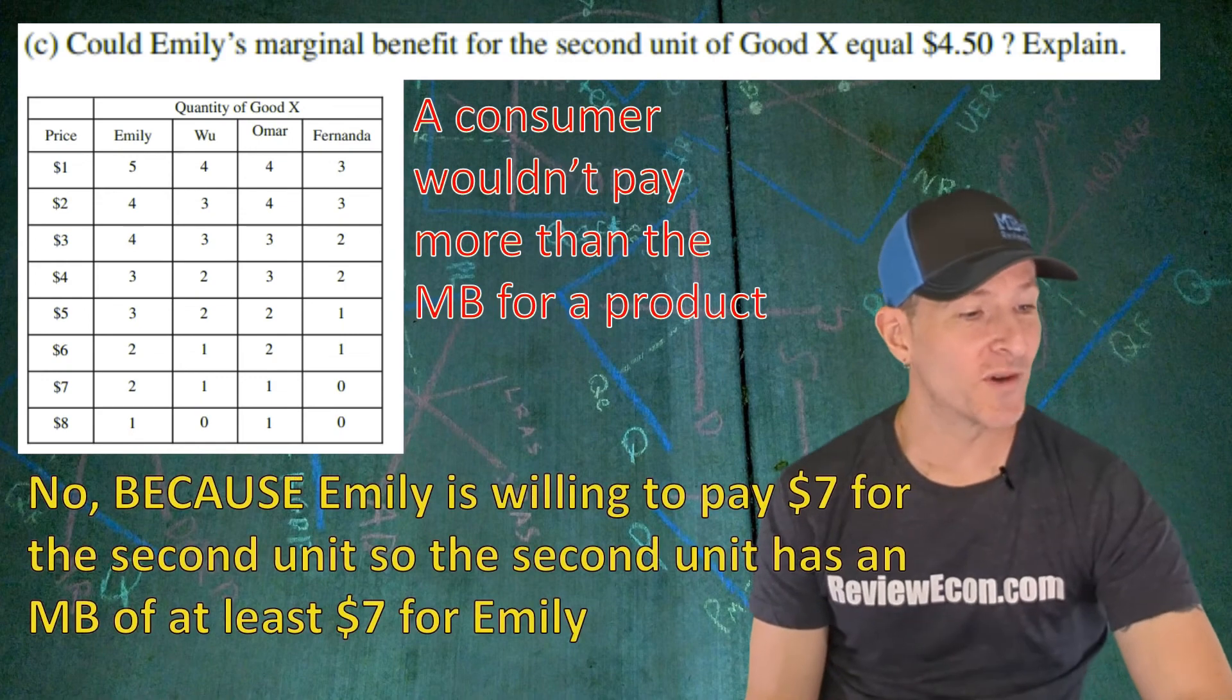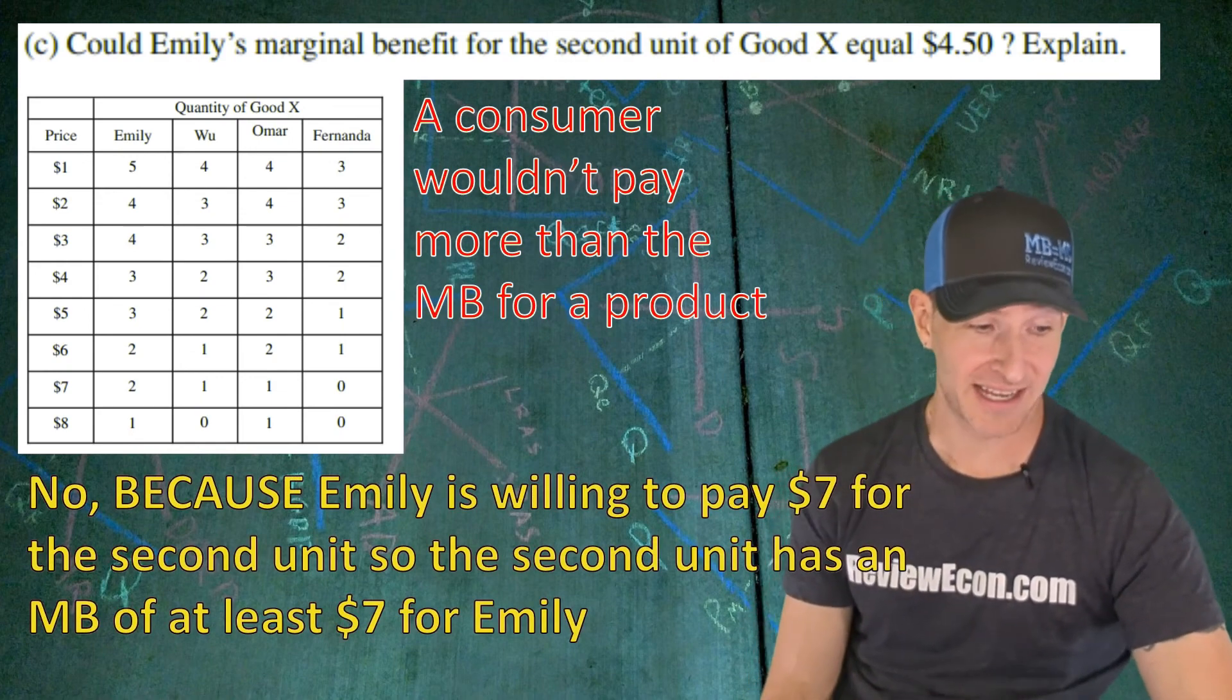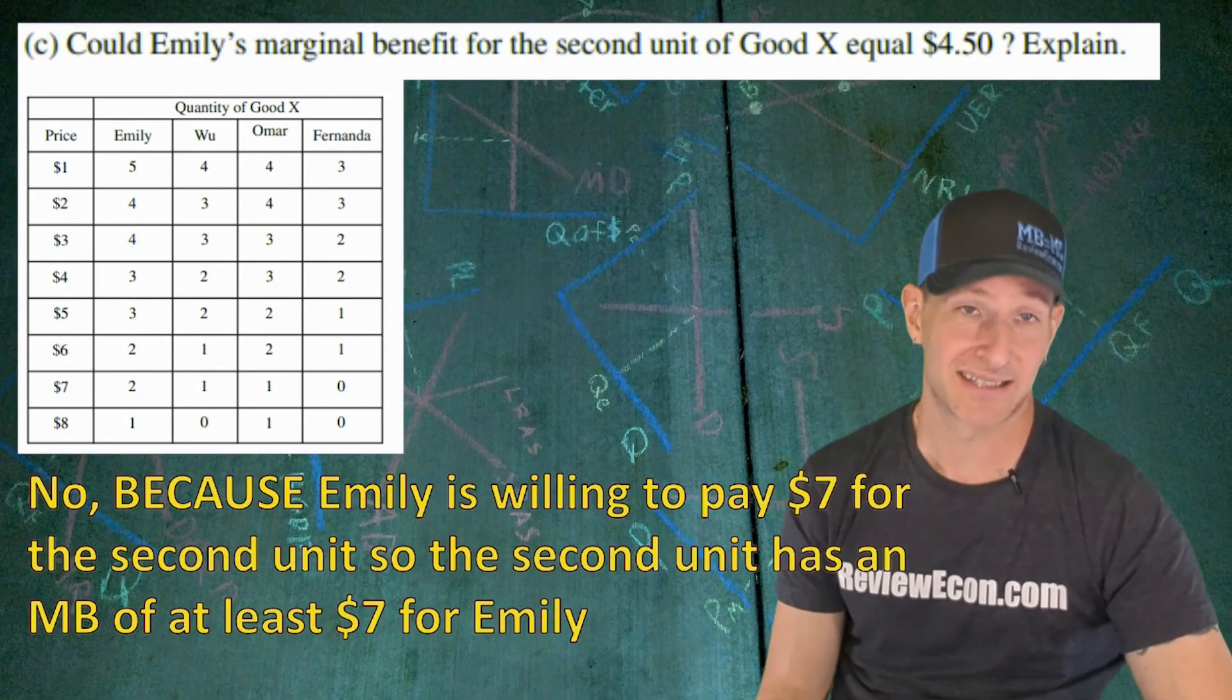So the answer we're looking for on this one is no, because Emily is willing to pay $7 for the second unit. So the second unit has to have a marginal benefit of at least $7.